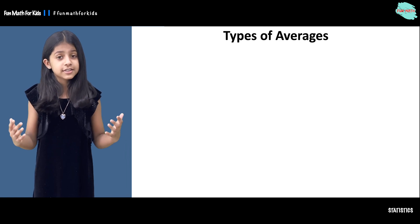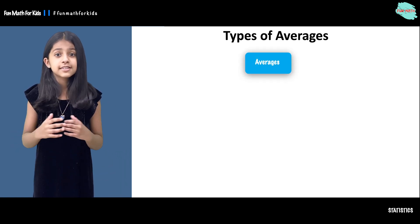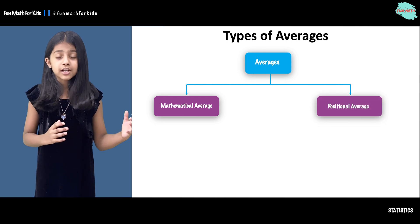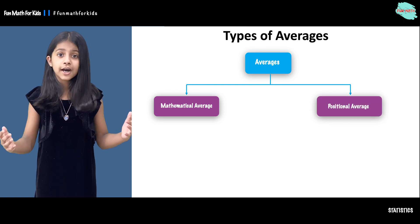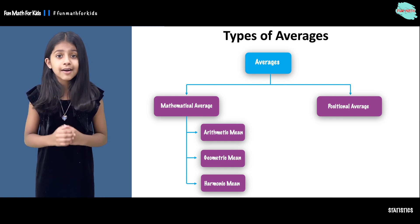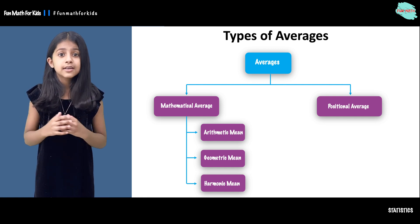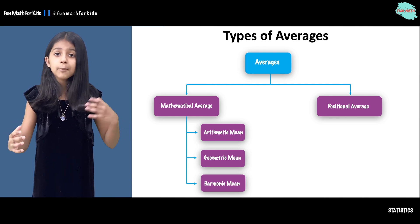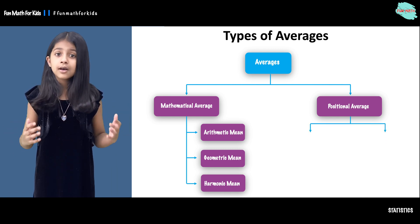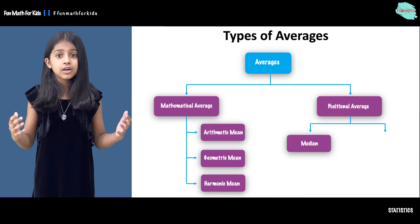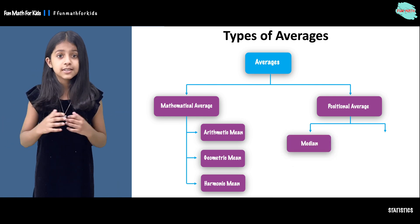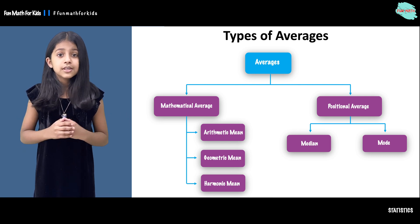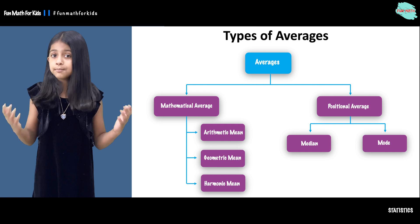Before we move on, let's understand types of averages. There are two different types of averages: mathematical average and positional average. In mathematical average, there are three different types of mean: arithmetic mean, geometric mean, and harmonic mean. In positional average, there are two different types: median and mode. In this video, we'll be mostly focusing on median.